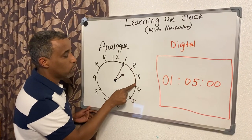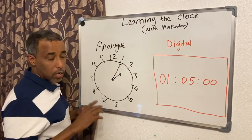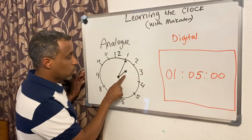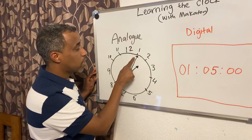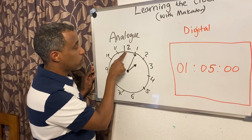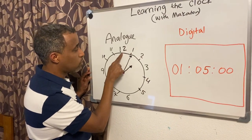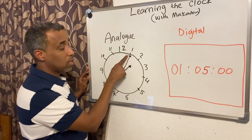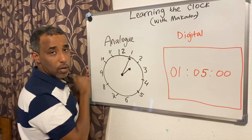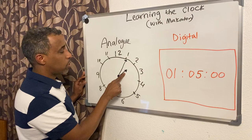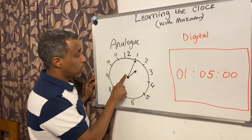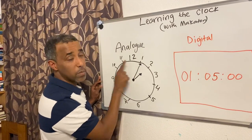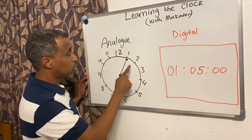Now the time is: the short hand is pointing to two, which is two o'clock, and the long hand pointing to one. From twelve to one here, it's five minutes. So it's two-oh-five. The short hand tells us the hour and the long hand tells us minutes.